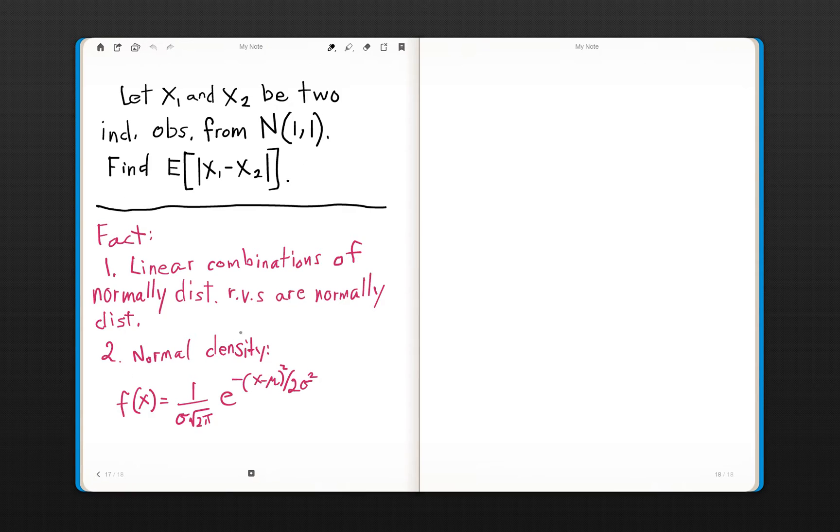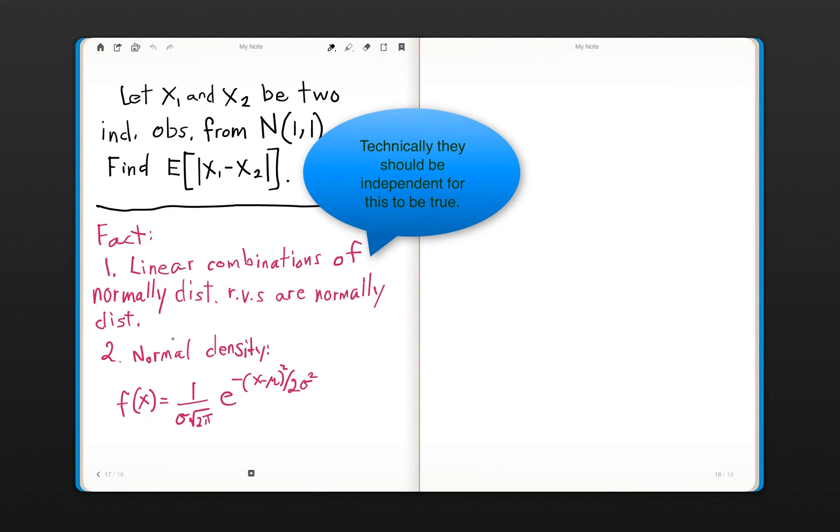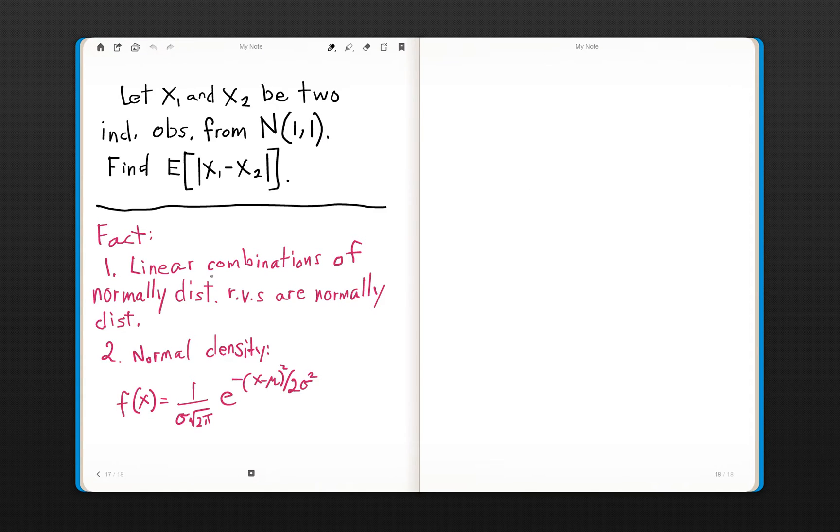As I do in all my problems when I'm solving them, I like to give you a little list of facts that you really need to know before tackling this problem, facts that you would need to know not only for this problem, but perhaps other problems on the actual test. They're very helpful to know because they can be applied to many problems. The first fact here is linear combinations of normally distributed random variables are also normally distributed. So sums and differences of normal random variables are still normally distributed with their appropriate means and variances. We're going to use this fact.